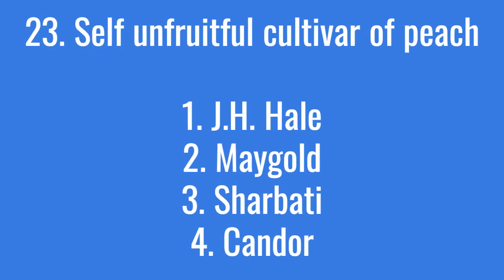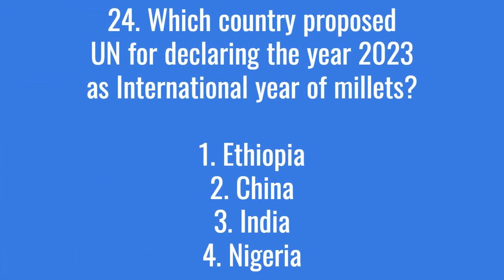Which is a self-unfruitful cultivar of peach? The correct answer is option 1: J.H. Hale. Which country proposed to the UN the declaration of 2023 as the International Year of Millets? The right answer is option 3: India.